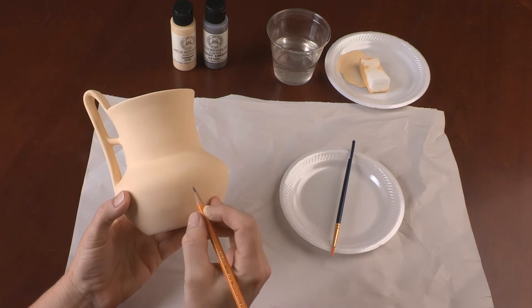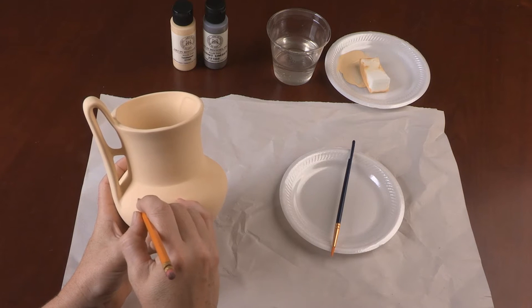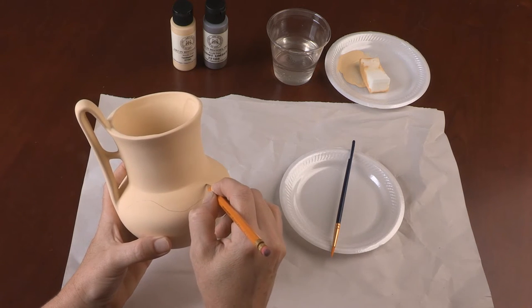Using the pencil, lightly sketch the designs you would like onto the replica. There are numerous examples located in the lesson plan. You can freehand lines around the replica.